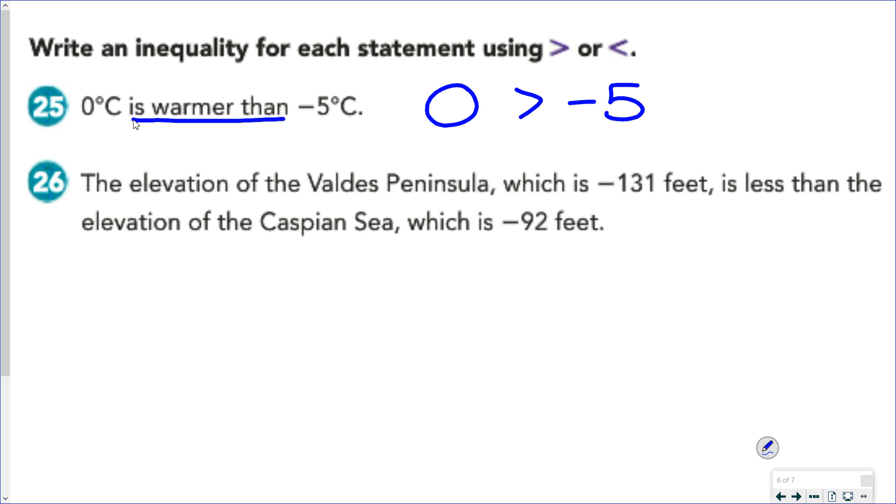26, the elevation of the Valdez Peninsula, which is negative 131 feet, is less than the elevation of the Caspian Sea, which is negative 92 feet. So you should write negative 131 is less than negative 92 based on how it's written. But if you wrote negative 92 is greater than negative 131, I will probably not mark it wrong.